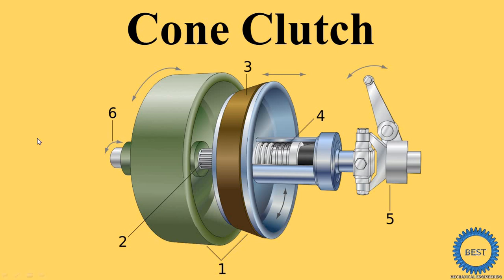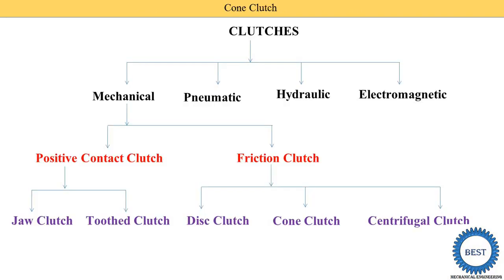In this video, I explain about the cone clutch. Cone clutch is one type of mechanical clutch and it is also called as the friction clutch. In a friction clutch, there are three types: disc clutch, cone clutch, and centrifugal clutch.